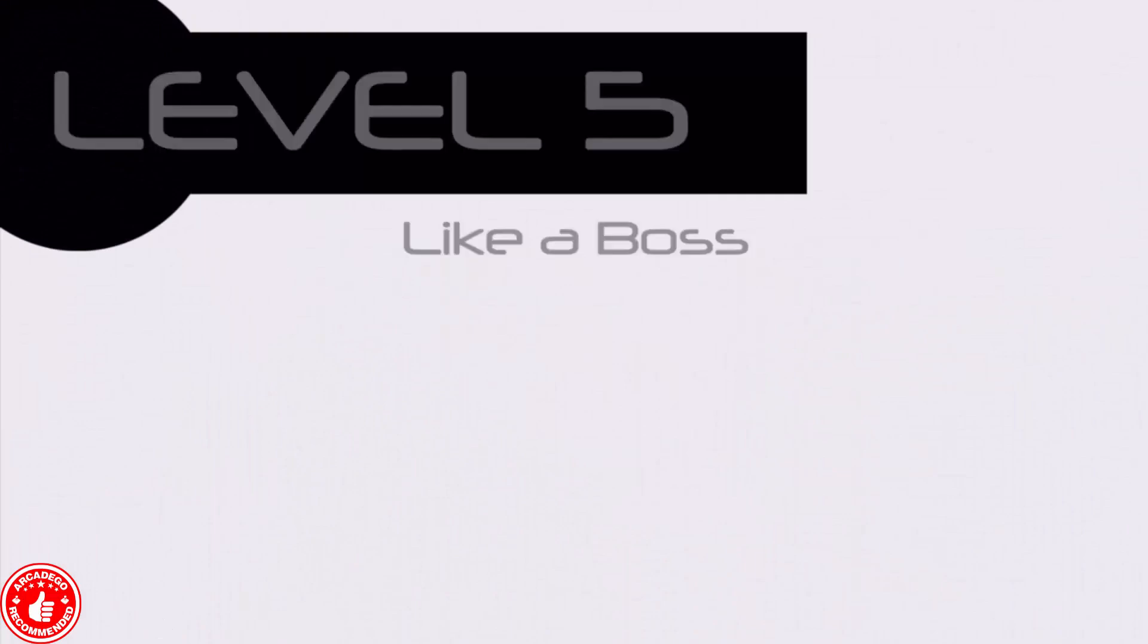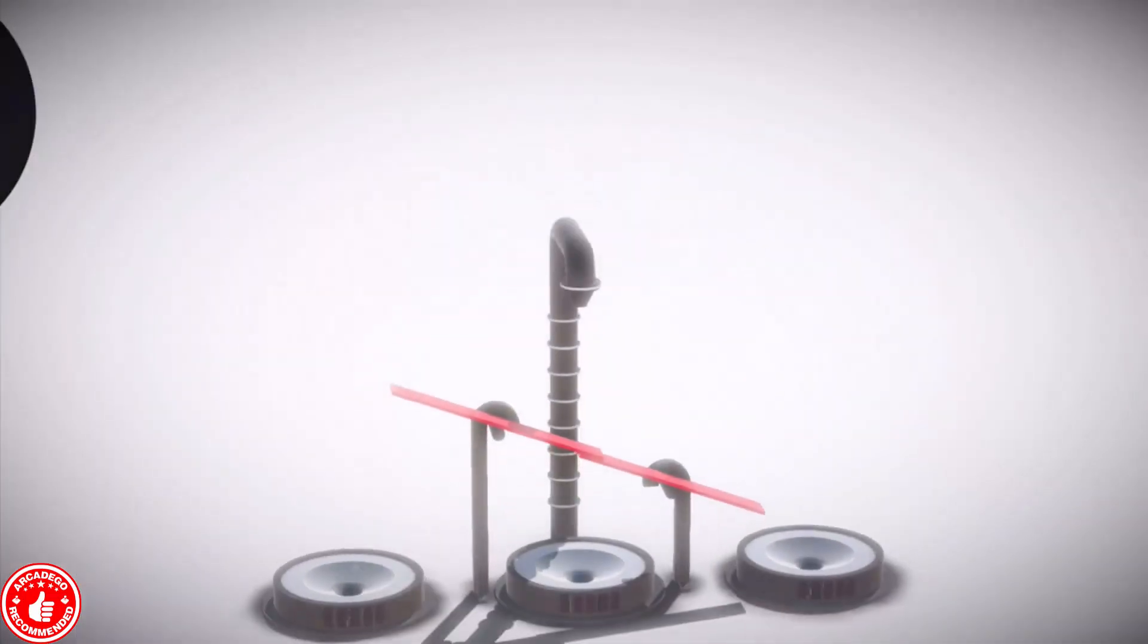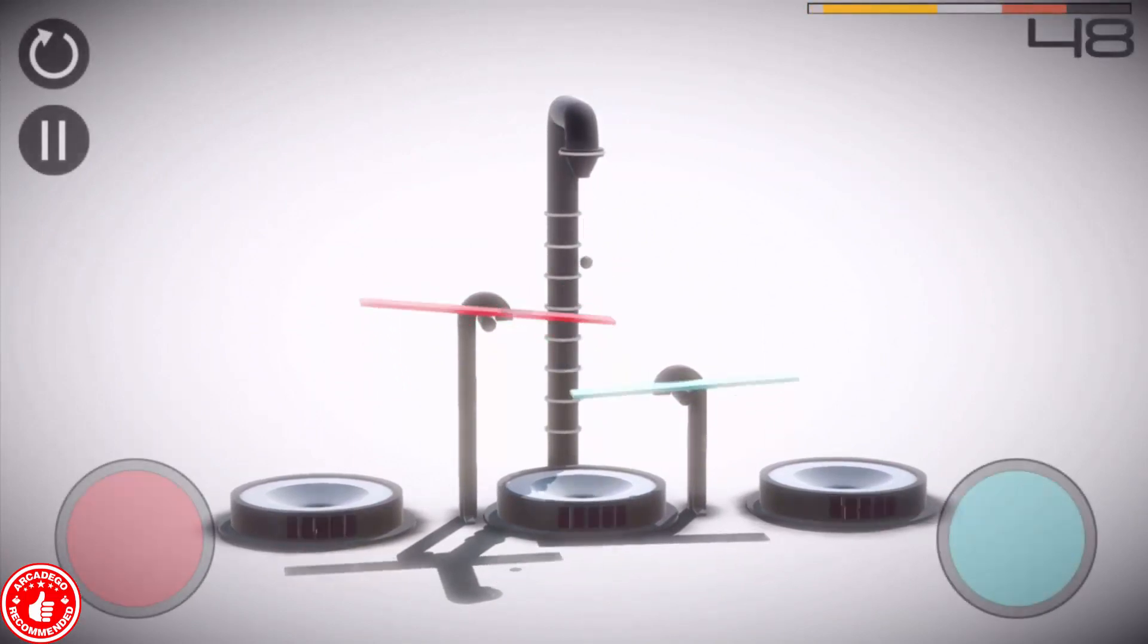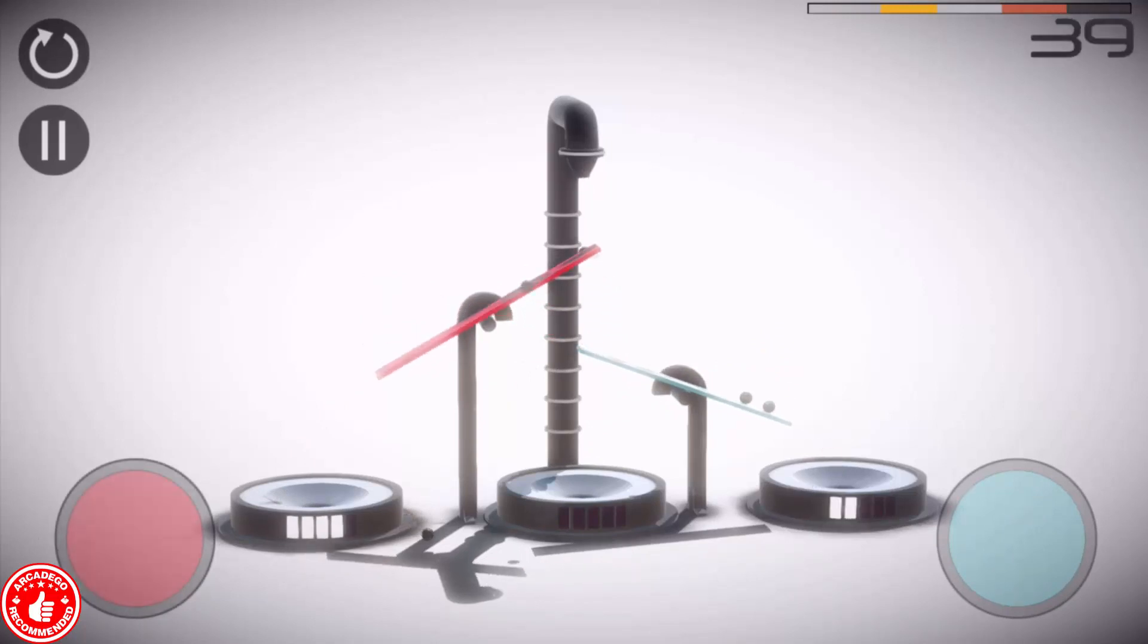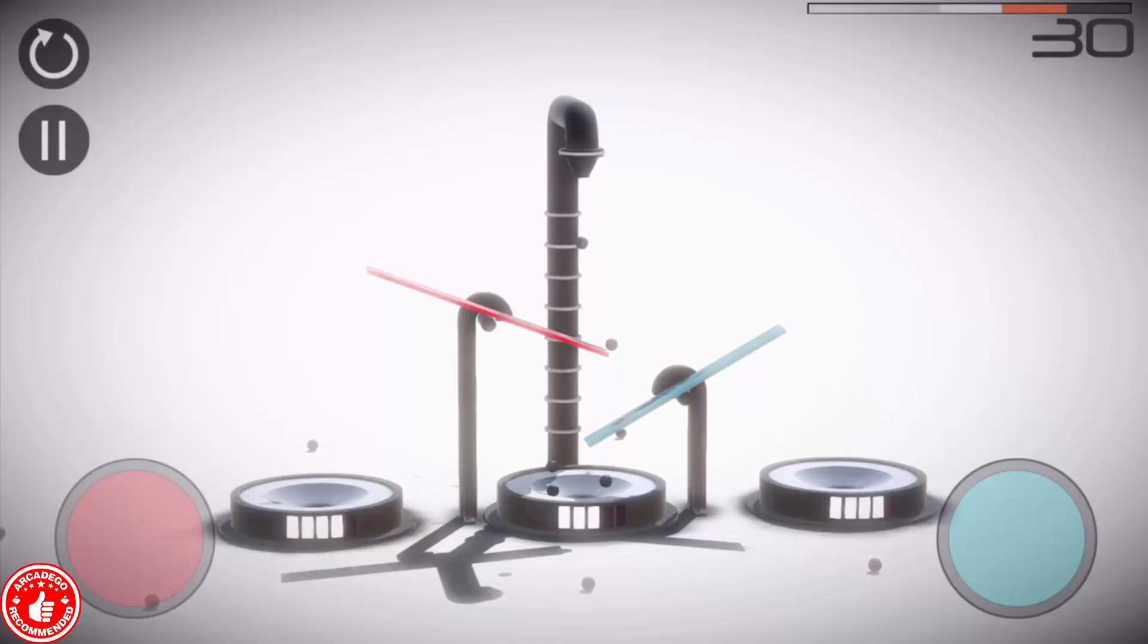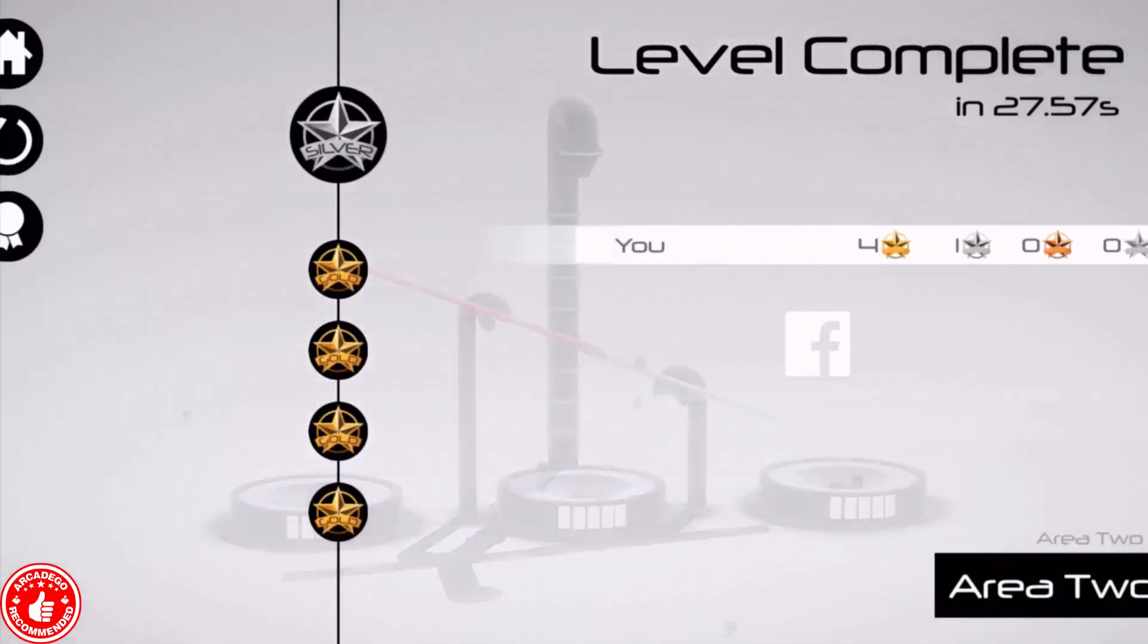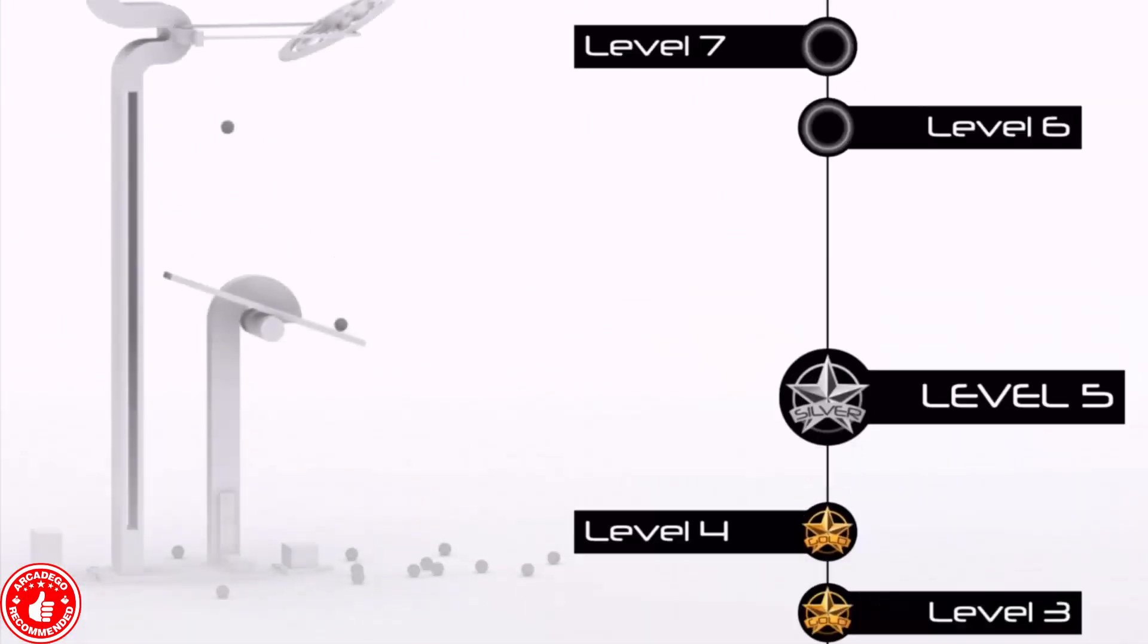So as you can see, it gets harder and harder every single time. And it gets more interesting. Let's go to level 5, like a boss. How do you do this one? So you should get a certain amount of balls into each one. That's interesting. Let's try and get more in the middle one now. I'm still missing one on the side and one on this other side. That should do it. There we go. Yeah, it gets trickier and trickier every single time.